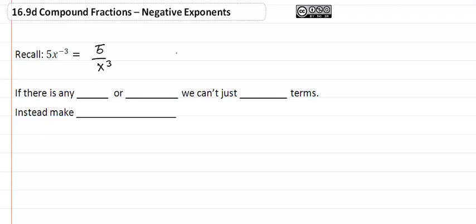And so what that means for us is that when we're looking for the LCD and we have negative exponents, we're going to look for the highest exponent, remembering that the negative is in the denominator.